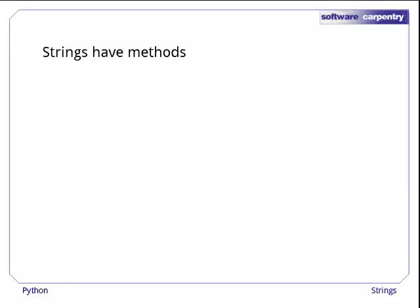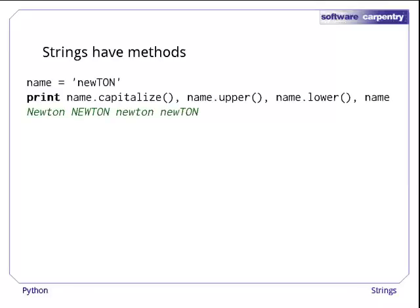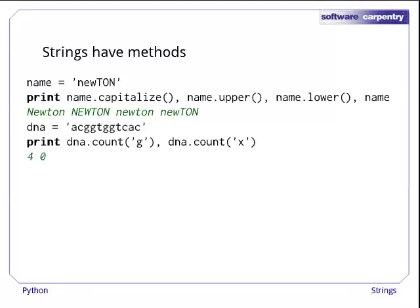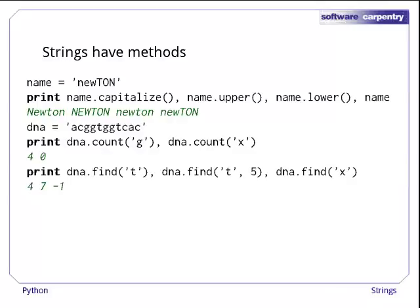Like lists, strings have methods. For example, the capitalize, upper, and lower methods return new strings that translate some or all of the characters of the original. These methods don't modify the original string, though, because strings are immutable. Another method, count, returns the number of times a character occurs in the string. And find returns the index of the first occurrence of a character, or negative one, if the character can't be found.